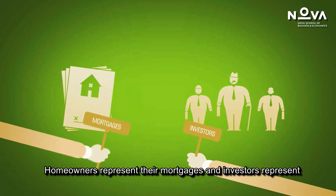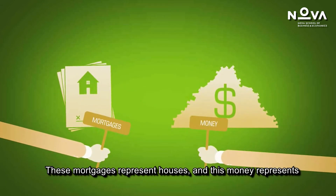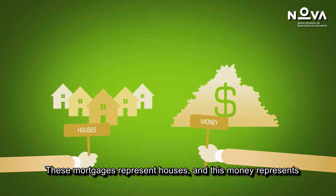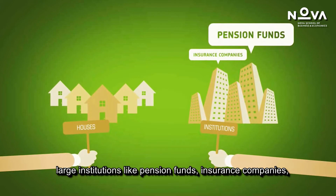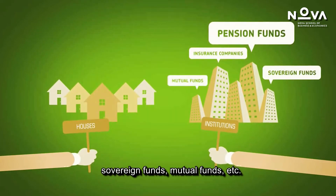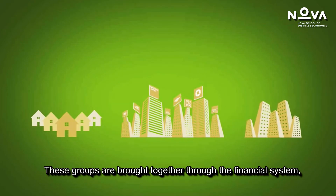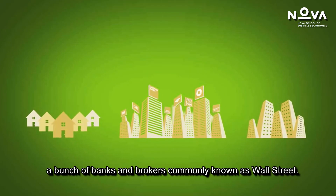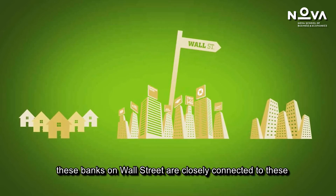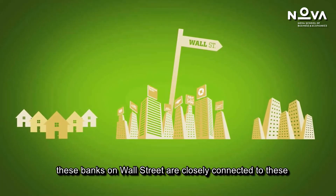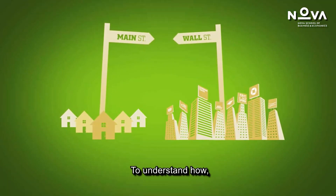The credit crisis brings two groups of people together: homeowners and investors. Homeowners represent their mortgages and investors represent their money. These mortgages represent houses, and this money represents large institutions like pension funds, insurance companies, sovereign funds, mutual funds, etc. These groups are brought together through the financial system — a bunch of banks and brokers commonly known as Wall Street, closely connected to houses on Main Street.